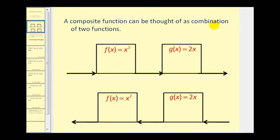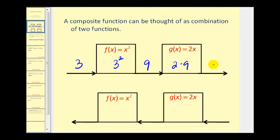One way to illustrate this would be to use a conveyor belt where we have an initial input, let's say three, and it becomes the input into F, where F squares its input and produces an output of nine. This output becomes the input into G. So we multiply two times nine, and the final output of this composite function would be eighteen.